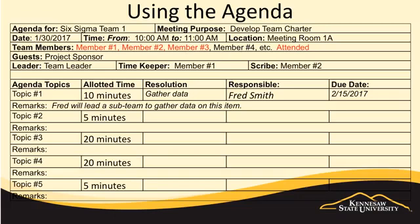As you go through the agenda, the timekeeper should remind the leader about allotted time. If the time for an agenda item is used up, it should not be extended unless the team agrees. The team should be made aware that if we extend the time for topic one, for example, we may not have time for topic five in this meeting. For this reason, it may be a good idea to arrange agenda items in the order of importance.